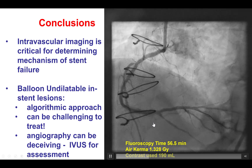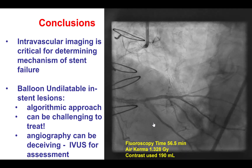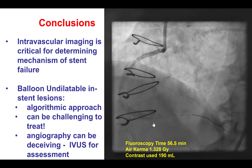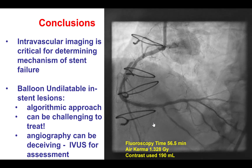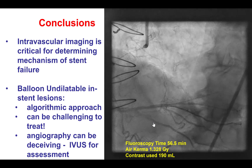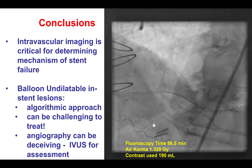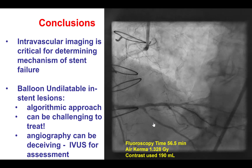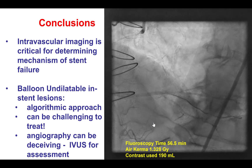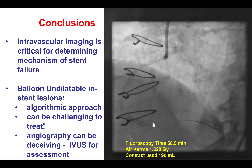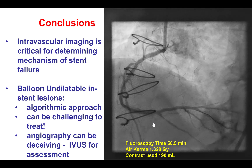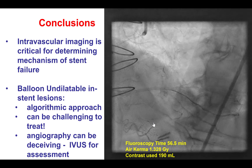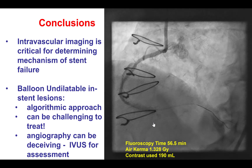In summary, stent underexpansion is one of the key mechanisms of in-stent restenosis. Successfully expanding the stent is important to prevent recurrent in-stent restenosis, and this can usually be achieved using a variety of balloons and plaque modification techniques, but in some cases, like this one, all these techniques may fail.